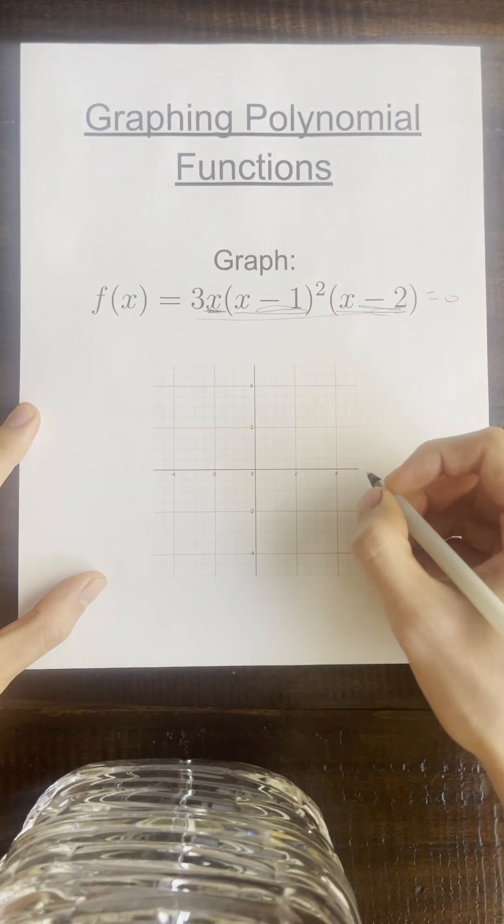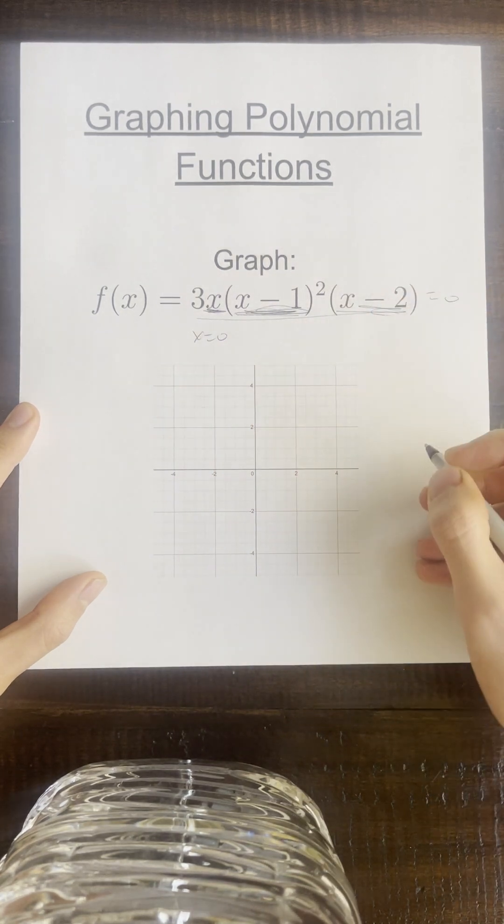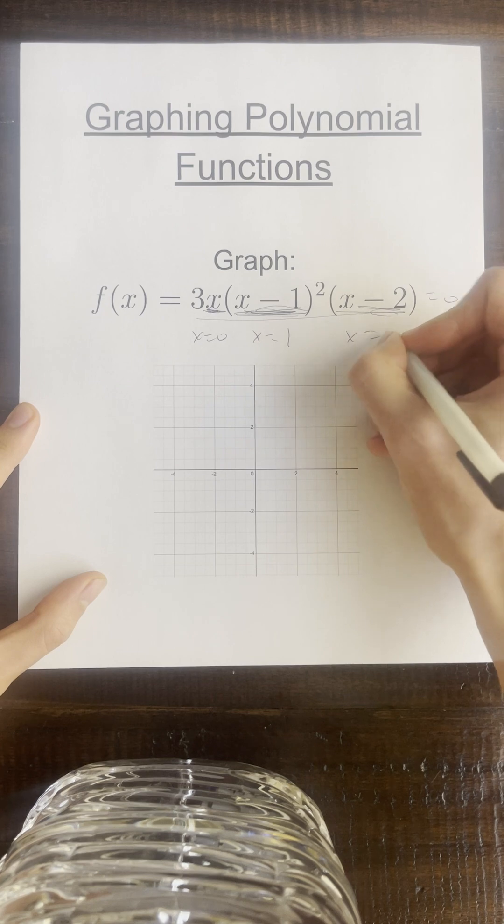So when this is zero, what does x have to be? x would have to be zero. How about for this one? In order for this to be zero, x would have to be equal to how much? One. And for this one, x would have to be two.